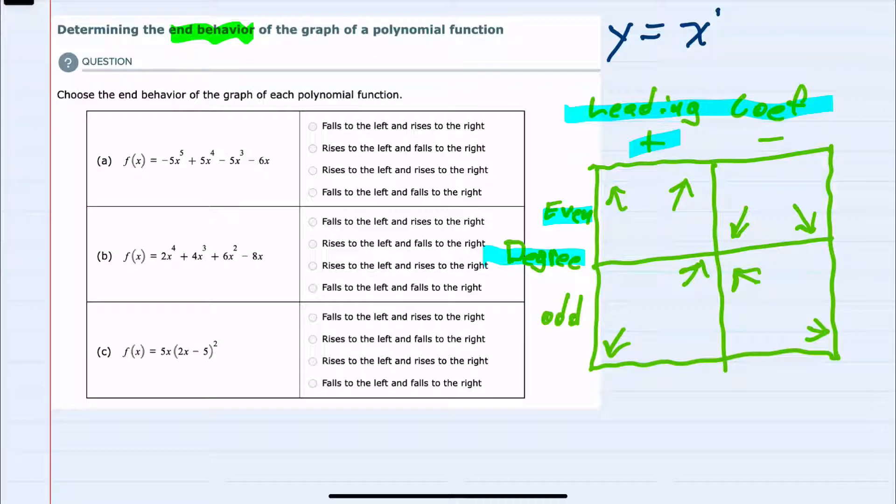Here our degree is 1. So when the degree is odd and there is a positive leading coefficient, the graph of y equals x just goes from the left to the right upwards.